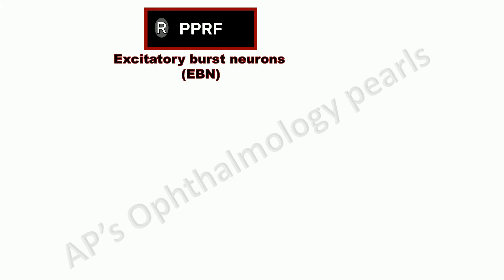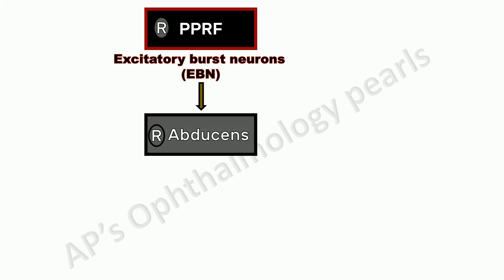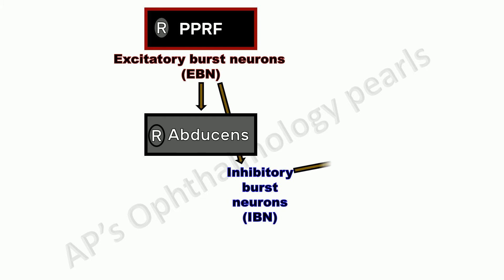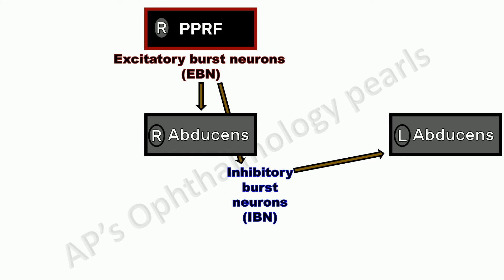Let's first discuss horizontal saccades. The pulse for a saccade is generated in the ipsilateral PPRF by activity of the excitatory burst neurons, which project to the ipsilateral abducens nucleus. The excitatory burst neurons also project via the inhibitory burst neurons to the contralateral abducens nucleus. Burst neurons are active only just before and during saccades, as they are held in check by omnipause neurons at all other times.